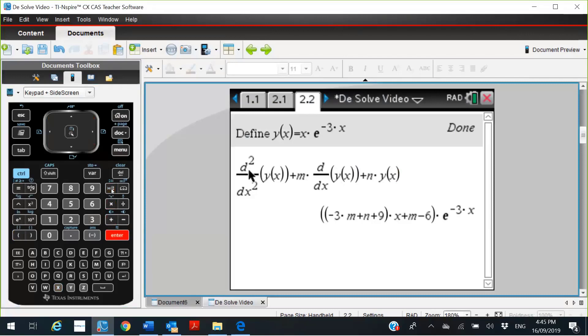Now if that was equal to 0, then we know that -3m plus n plus 9 equals 0 because that's the coefficient of x, and also m minus 6 is equal to 0. So we're going to have to solve this command equal to 0 for both m and n.